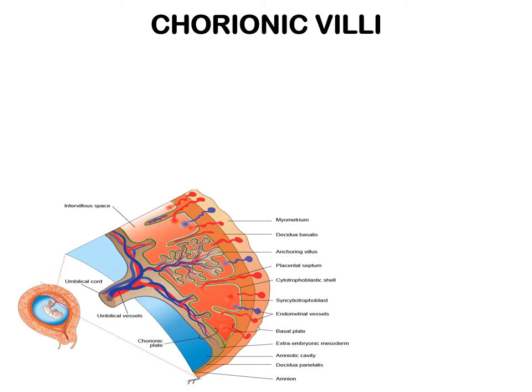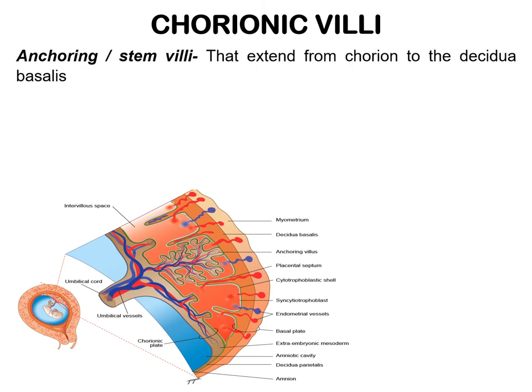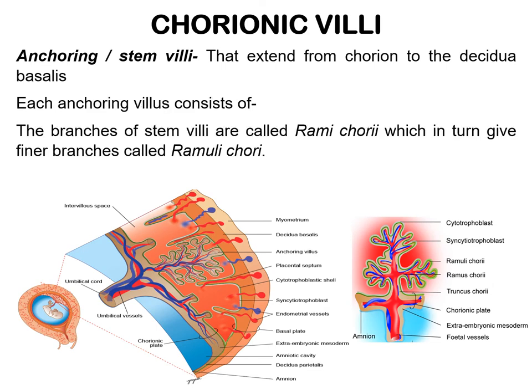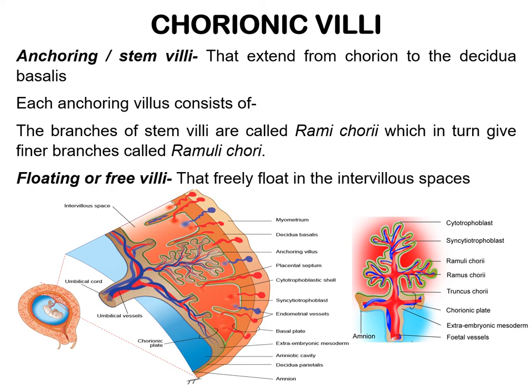The villi which are attached on one side to the chorionic plate of the fetus and on the other side to the maternal tissue, i.e. decidua basalis, are known as anchoring villi or stem villi. The branches of the stem villi are called ramei corae, which in turn give rise to finer branches called rameuli corae. Also, there are numerous villi that freely float in the intervillus spaces, known as free or floating villi.